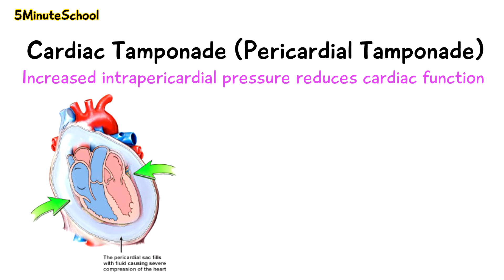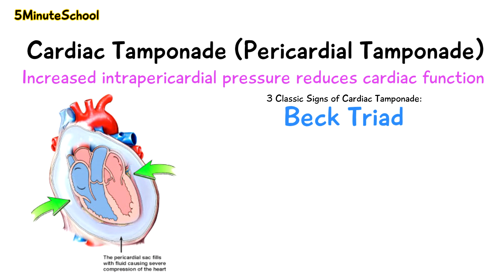There are three classic signs of cardiac tamponade called Beck's triad. The first is hypotension, due to reduced cardiac output because less blood is being pumped out of the heart.